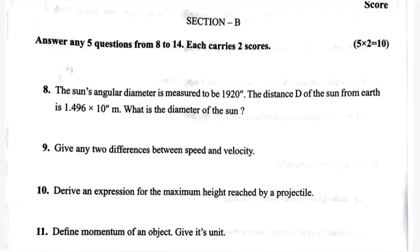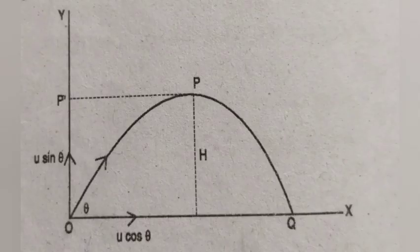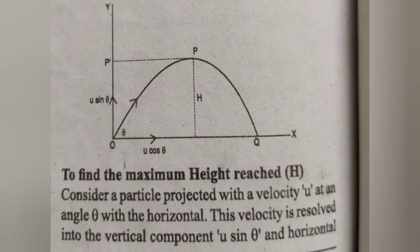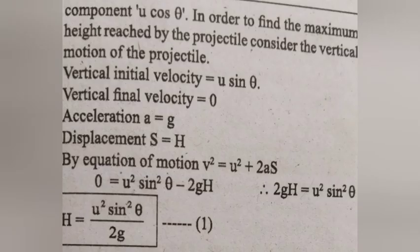Question 10: Derive an expression for the maximum height reached by a projectile. Answer: Consider a particle projected with a velocity u at an angle theta with the horizontal. This velocity is resolved into the vertical component u sin theta and the horizontal component u cos theta. In order to find the maximum height reached by the projectile, consider the vertical motion of the projectile.